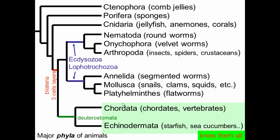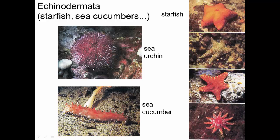Echinoderms are starfish, sea cucumbers, and all that. The sea cucumber has the body stretched out with the mouth at one end and the anus at the other. Sea urchins have everything ventral. Starfish we're familiar with — there's a wide range. They appear to have five-fold symmetry, but when you actually analyze them, they have bilateral symmetry. It's kind of a myth that a starfish is a pentagon-type creature — it's really a bilateral creature, just superficially appearing like a pentagon.